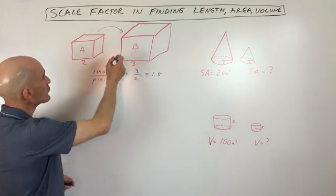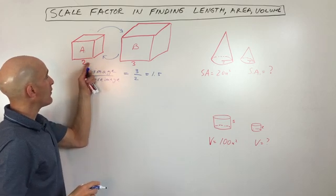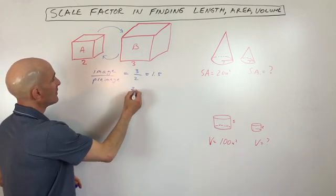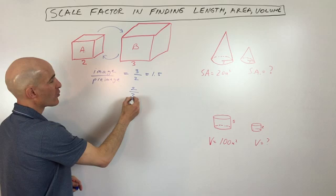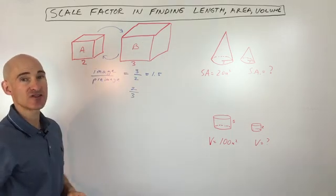Now, if you're going the other direction, if you're finding the scale factor from B to A, what you would do is you would do just the reverse. Now the image would be two, and the pre-image, the one before, would be three. So you can see that this is going to be two-thirds. The side lengths are going to be two-thirds.